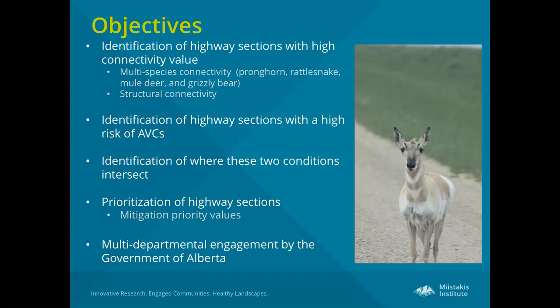This initiative also took on the importance of multi-departmental engagement by the Government of Alberta, which was really key. Alberta Transportation is mandated to address motorist safety — they're not mandated for the protection of biodiversity. However, Alberta Environment Parks is mandated to manage biodiversity. So it's really important to engage these government agencies together so that they can both be achieving what they're mandated to do.